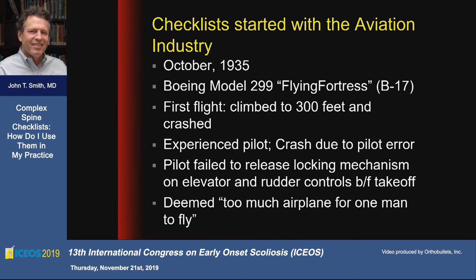Checklists really started with the aviation industry, and particularly in 1935, where Boeing was competing to build the ultimate airplane — the Flying Fortress, or the Model 299, also known as a B-17. This was a magnificent airplane: four engines, powerful, could go faster, higher, and longer than anything else.